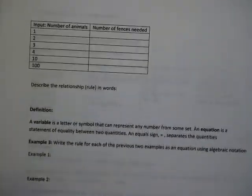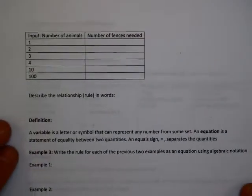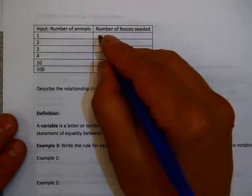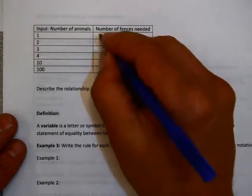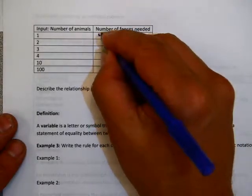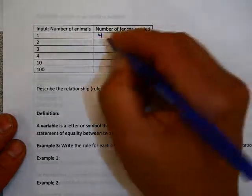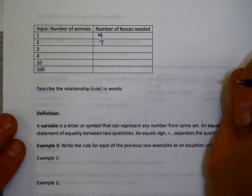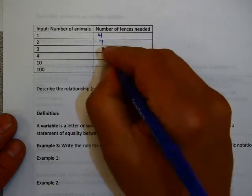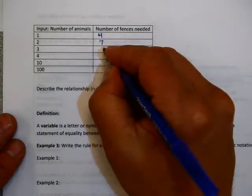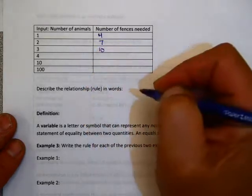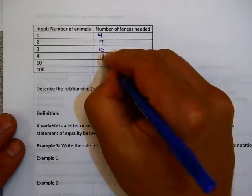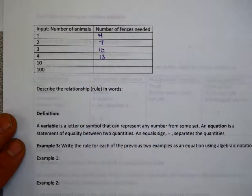Now let's take a look at an input-output table. For one pen we would need four fences. For two, we would need seven — we saw this from yesterday. For three, we would need ten. For four, we would need thirteen. We kind of see that pattern.